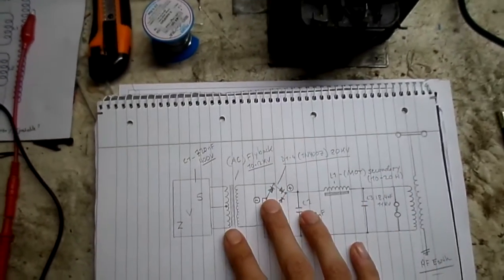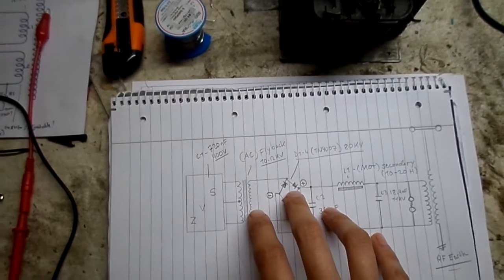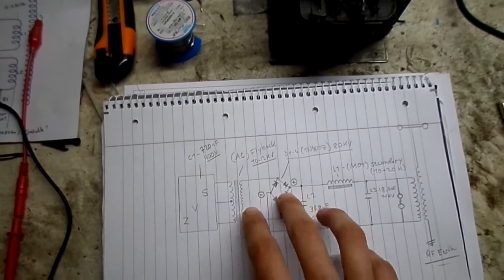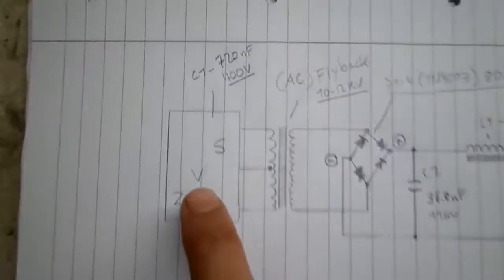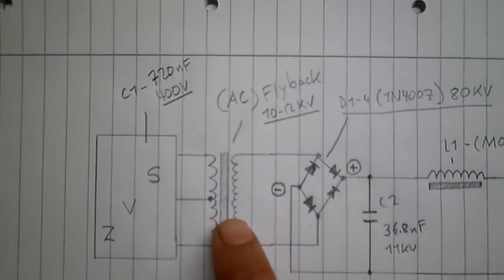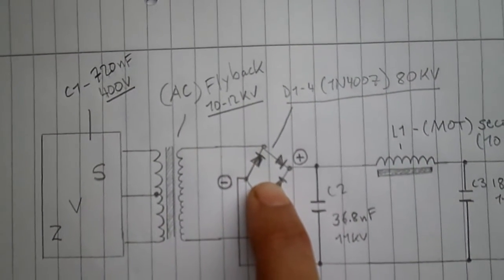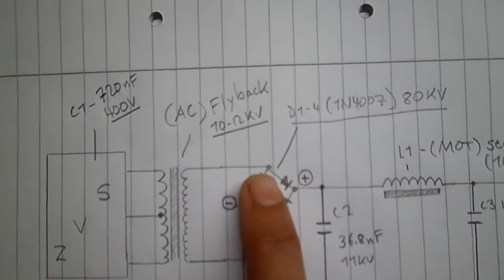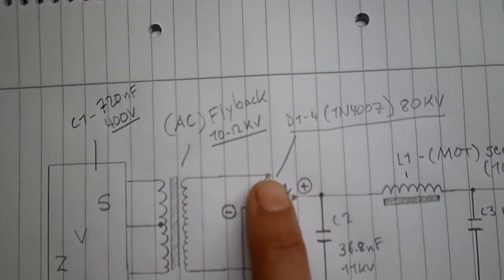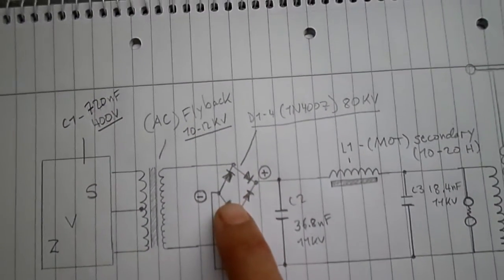This is basically how I set up my DC powered Tesla coil using a ZVS driver, an AC flyback, and a full bridge rectifier. I'm pretty sure that you can just put in a single diode and have this half wave rectified. I haven't tested it yet.